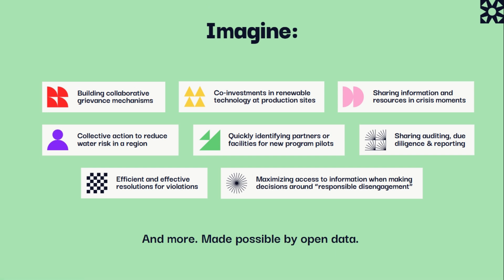This video is for civil society organizations and worker rights groups looking to make the most use of Open Supply Hub. While it might not seem immediately obvious, there are so many human rights and environmental issues where supply chain transparency can play a critical role in addressing. Here's how.